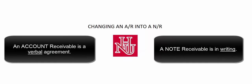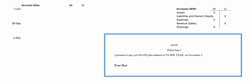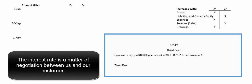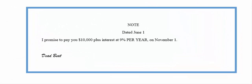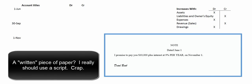An account receivable is a verbal agreement between us and our customer. We send them an invoice and they're going to pay us in 30, 60, or maybe 90 days. But sometimes customers run a little short on cash and approach us about getting an extension, and we might agree to change their account receivable into a note receivable. There are two reasons we might do that: we can attach an interest rate to earn interest, and they give us something in writing acknowledging the debt, so if we have to go to court we have a written document.